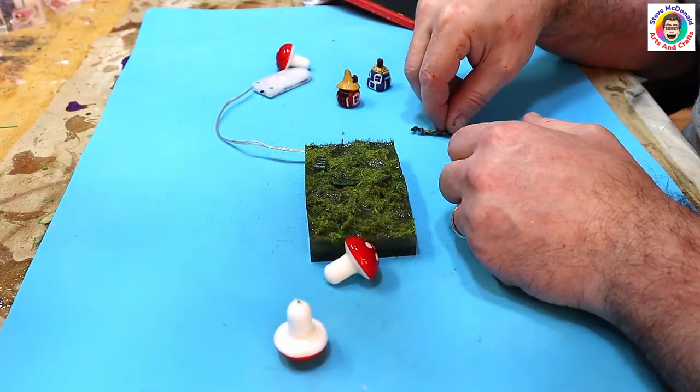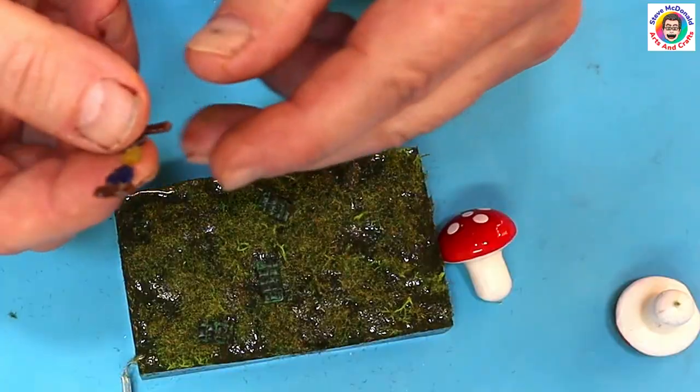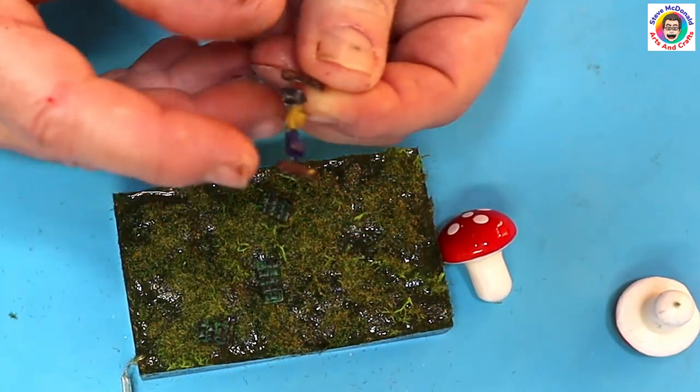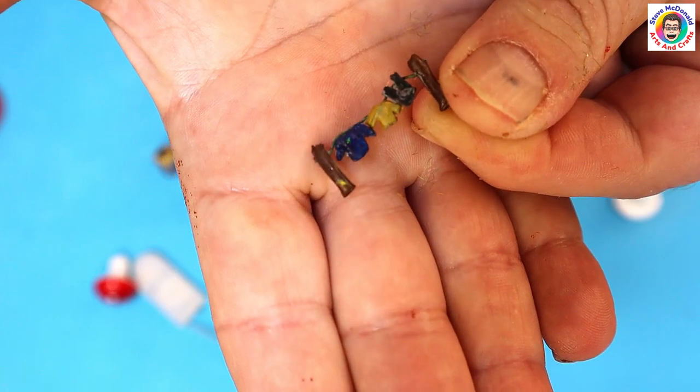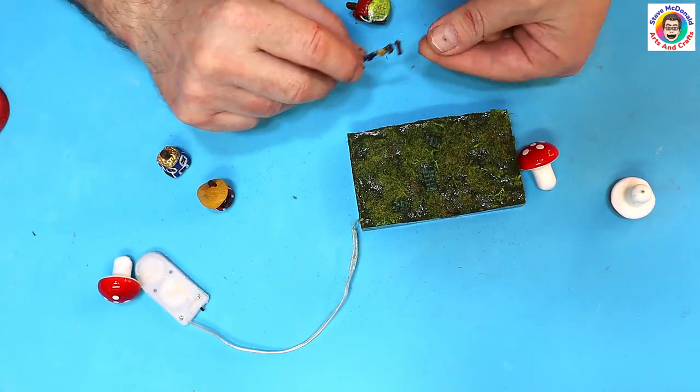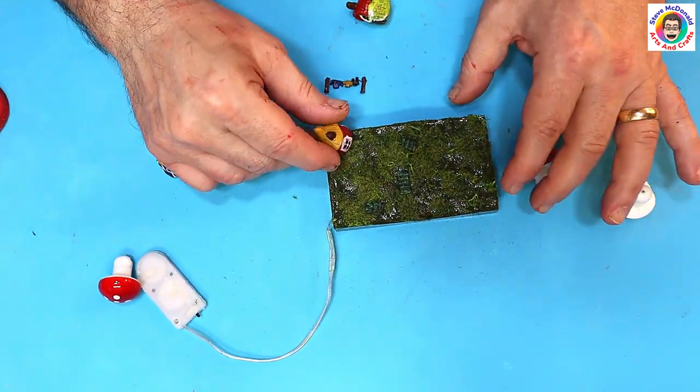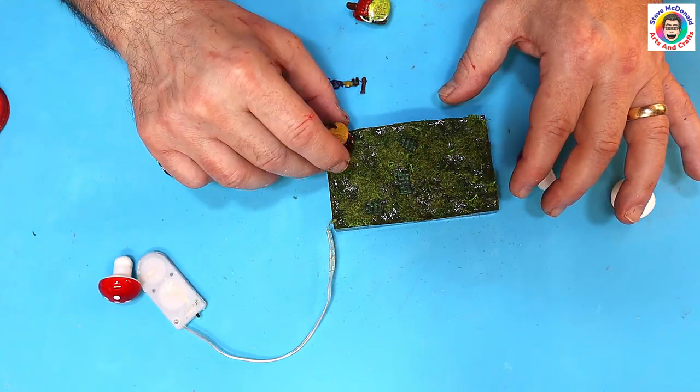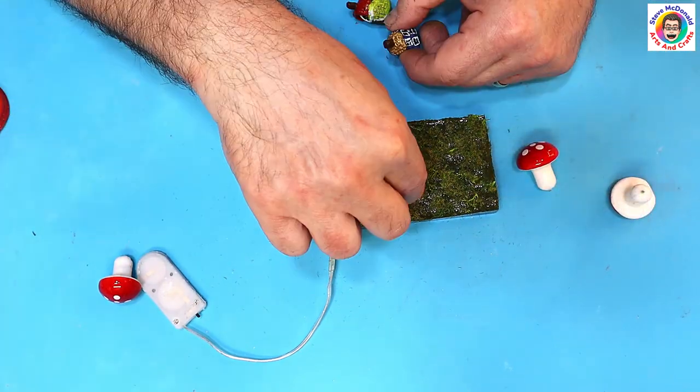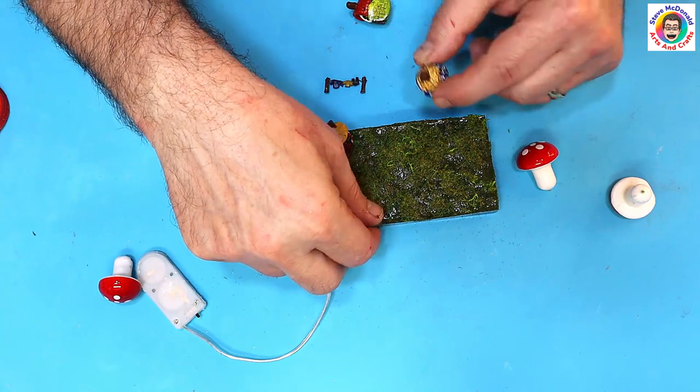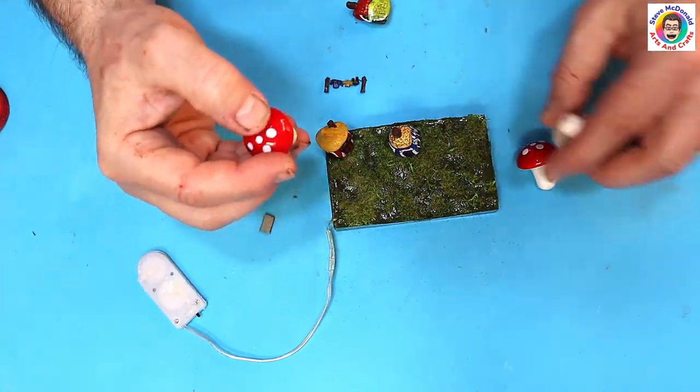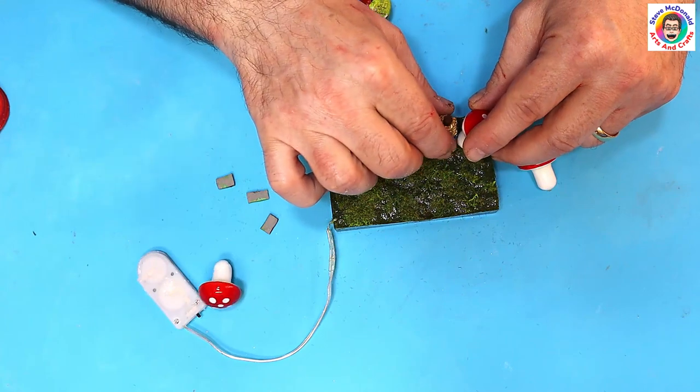And I also made a teeny weeny itsy bitsy little washing line. I think that's so cute. So what I need to do now is I need to pop the houses on here and then pop the paths on them. I'm also going to put the little mushrooms on here as well. I was thinking of doing like a mushroom and then a little house.